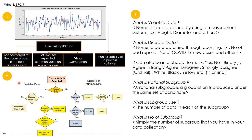The second point is the selection of the control chart, which depends on the type of data. For variable data, first determine whether you have a subgroup or not. If there is no subgroup, select the IMR chart (Individual Moving Range). If you have a subgroup, determine the subgroup size: if more than 9, use X-bar S (Standard Deviation); if less than 9, use X-bar R (Range).